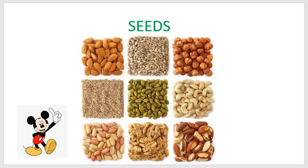Seeds. Do you know we are eating seeds every day — seeds of the plants? Seeds of different plants which we eat as food are called food grains. Cereals and pulses are types of food grains. We also get oil, coffee, and cocoa from seeds.